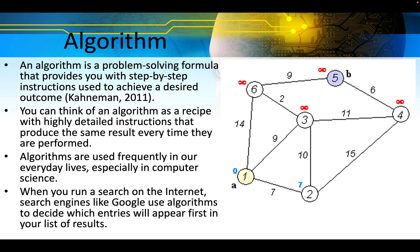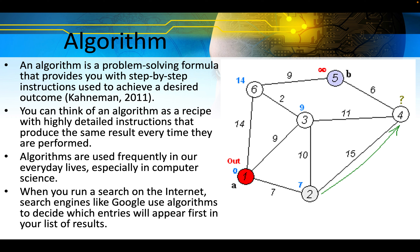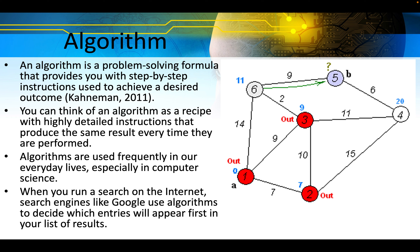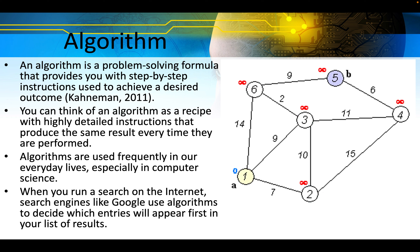An algorithm is a problem-solving formula that provides you with step-by-step instructions used to achieve a desired outcome, according to Kahneman in 2011. You can think of an algorithm as a recipe with highly detailed instructions that produce the same result every time. Algorithms are used frequently in our everyday lives, especially in computer science — when you run a search on the internet, search engines like Google use algorithms to decide which entries appear first in your results.